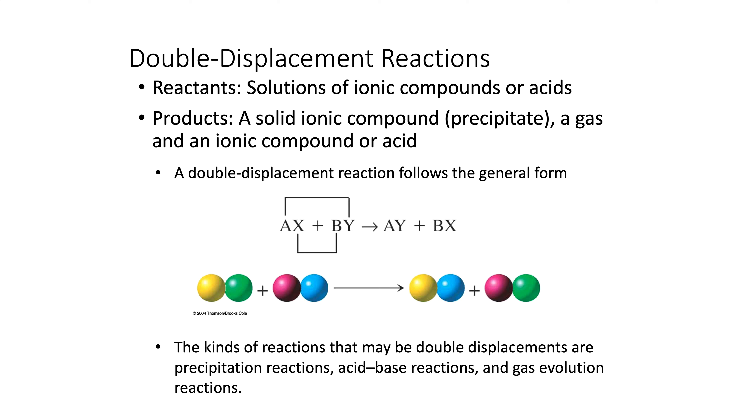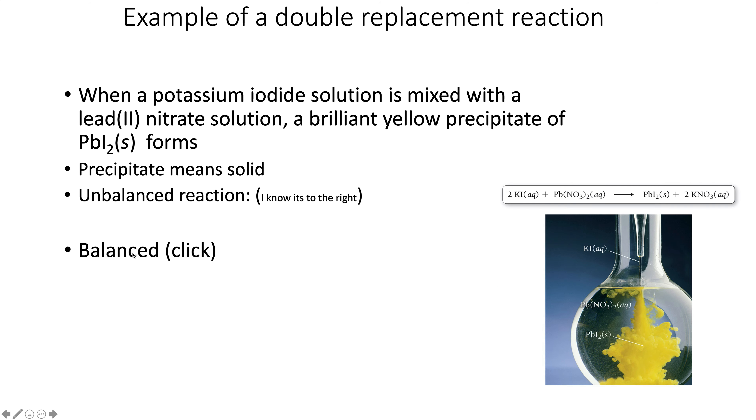The last type are double replacement or double displacement. We'll do a lot more with this in the slides on ionic equations, which will be posted as soon as I get them done. I call this the square dancing reaction because they are changing partners. It's AX plus BY makes AY plus BX. A was with X, now A is with Y. B was with Y, now B is with X.